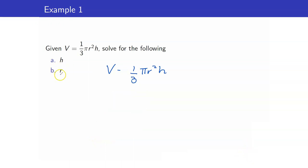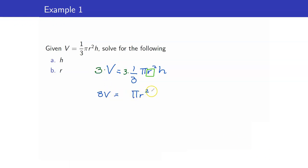Next, we want to solve for r. We want to get rid of one-third, pi, the square, and h. To determine which ones to remove first, you have to determine what was the last operation that happened with r. Using PEMDAS, r was raised to 2, and then multiplied to pi and h, and multiplied to one-third. So we have to get rid of one-third first by multiplying both sides by 3. We have 3v equals pi r squared h.